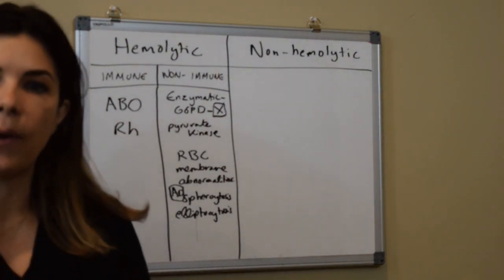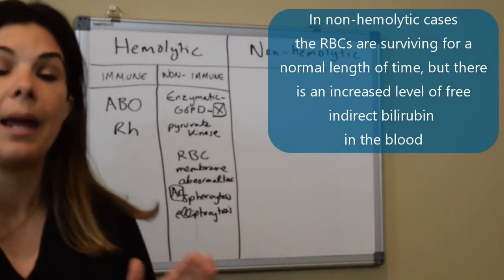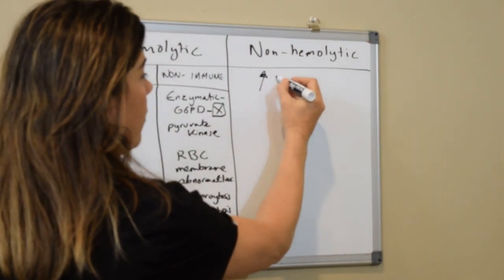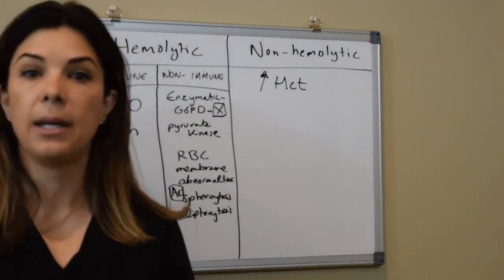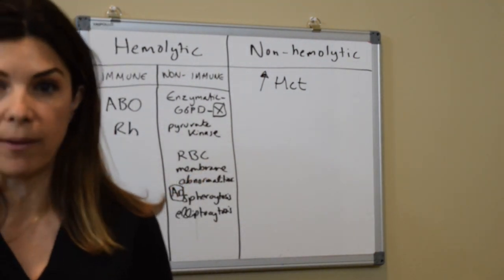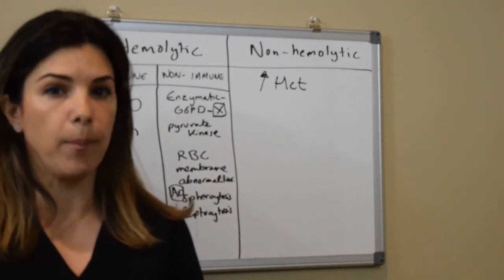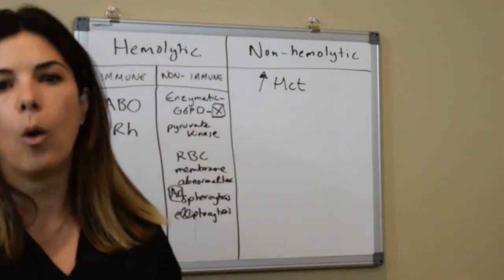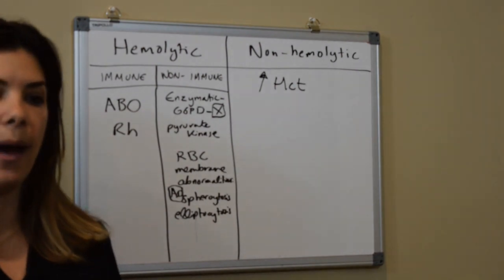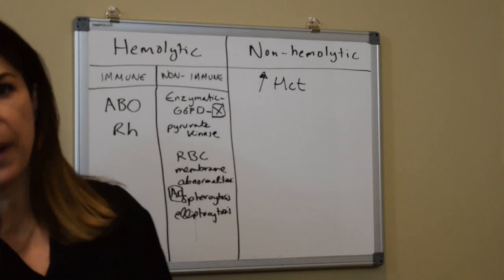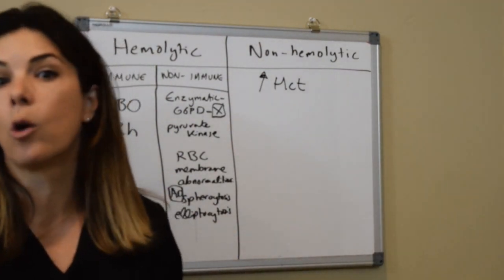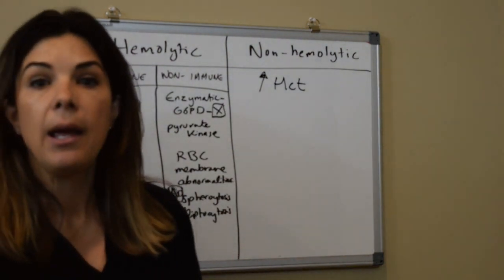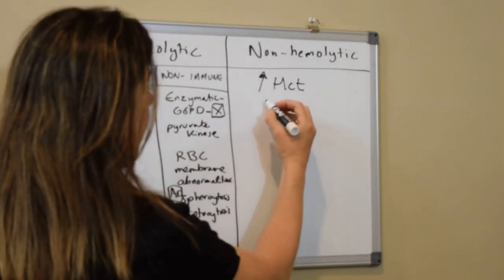Now let's go over the non-hemolytic causes of hyperbilirubinemia. In these cases, the red blood cells survive for a normal amount of time, but there is an increased level of free indirect bilirubin in the blood. If you have polycythemia with a hematocrit of 70, even normal red blood cell breakdown will produce more bilirubin. Another obvious cause would be a bleed anywhere — a cephalohematoma, intracranial hemorrhage in a preterm baby, subcapsular liver hemorrhage, or significant bruising from delivery — all of those areas of blood collection will eventually result in increased bilirubin.